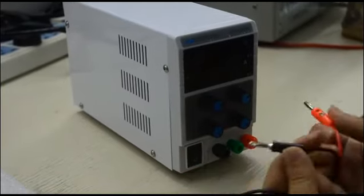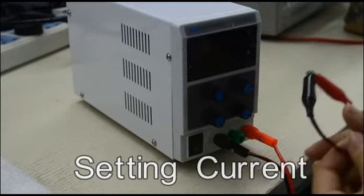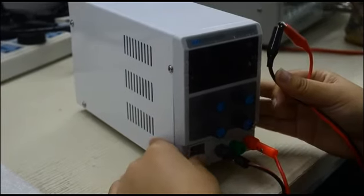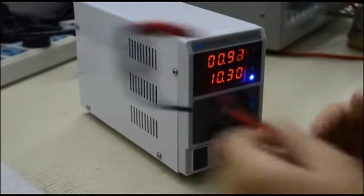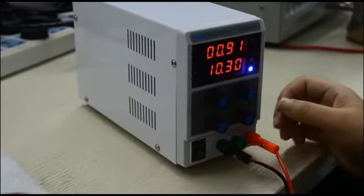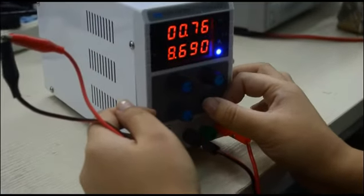Short out the negative and positive pole first, and power on. Use the same way as the voltage.